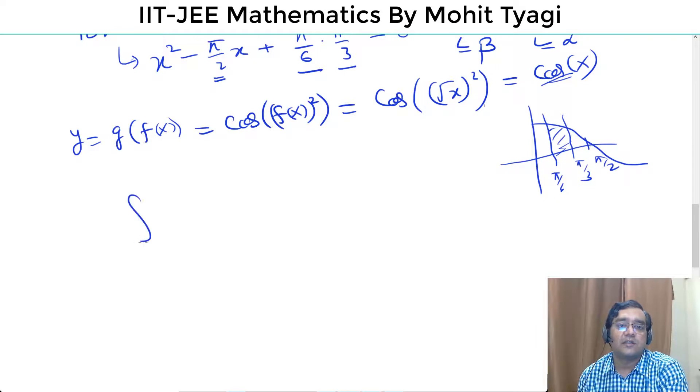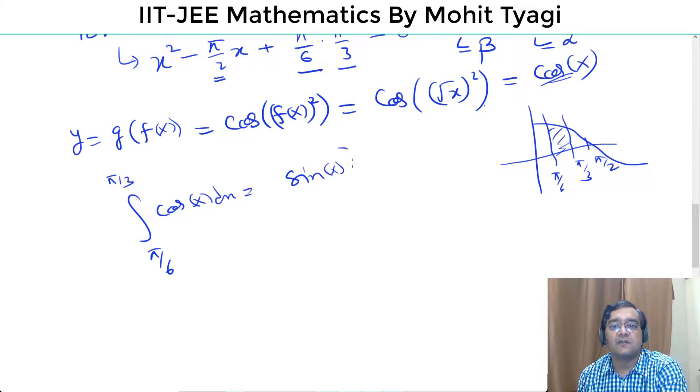Ultimately the area is integration from π/6 to π/3 of cos(x) dx. The integration of cos(x) is sin(x) from π/6 to π/3.